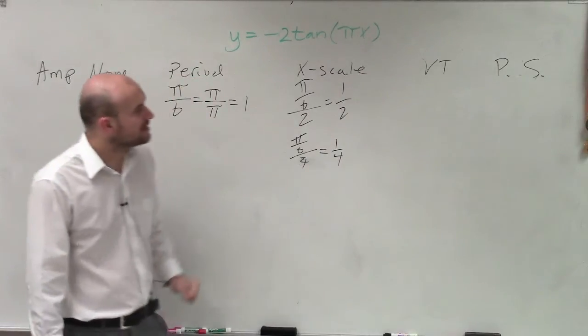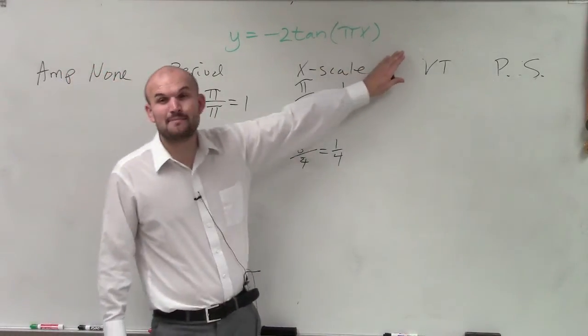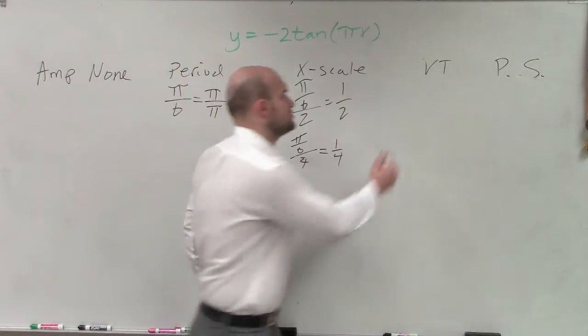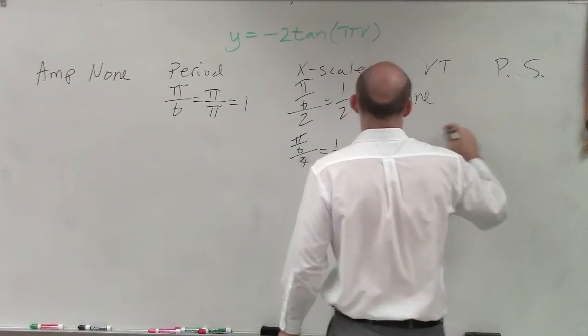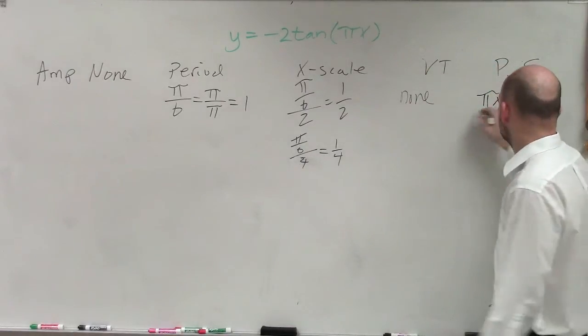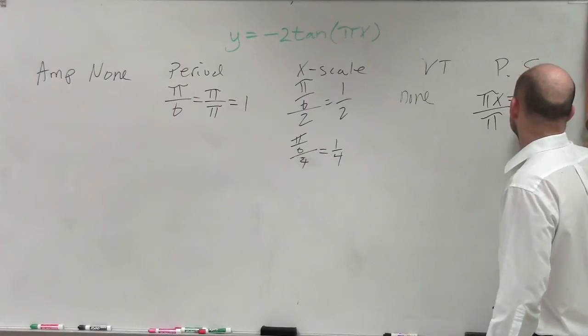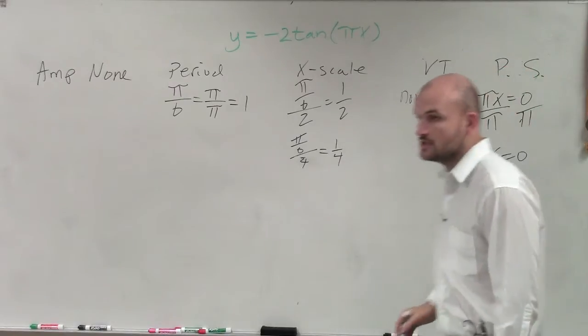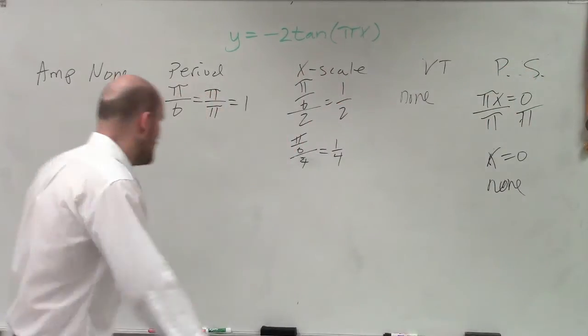So now, let's go ahead and find our vertical transformation. Am I being added anywhere up or down on this? No. So therefore, vertical transformation is none. And my phase shift, I just take what's inside my function, and I set it equal to 0, divide by pi. x equals 0. So therefore, it's none.